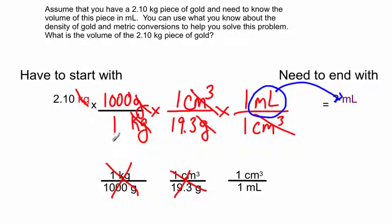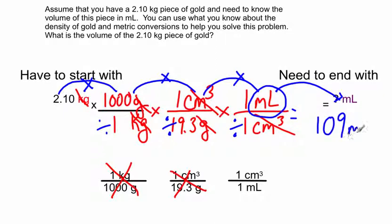Now it's time for the math. So pick up a calculator, multiply any number that's on top, divide by any number that's on the bottom. Now you can do all the numbers across the top, and then divide by all the numbers on the bottom, or you can just do it step by step. And I think this is a little bit easier for most kids. Notice, 2.10 times 1000, divided by 1. Then go to the next conversion factor. Whatever is in your calculator, multiply it by 1, which you don't really need to do, and then hit divided by 19.3. And then keep that number in there, multiply by 1, and divide by 1, which you don't really need to do, because it's the same thing. And then hit equals. And when you're all done, you should end up with about 109 milliliters.